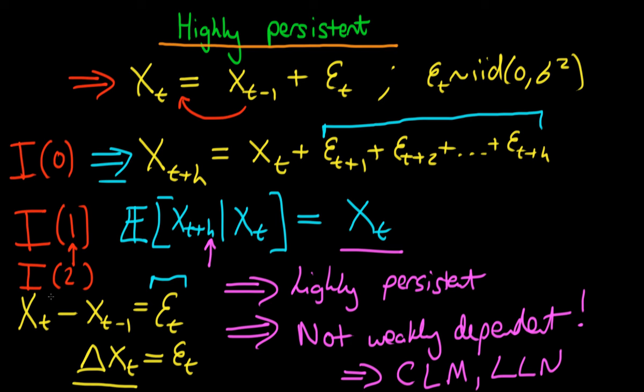Similarly we can define higher order integrated processes. An integrated of order 2 process means that you need to take the difference of the differences in order for that process to be weakly dependent. So only when you're looking at the differences of the differences is that a weakly dependent time series.